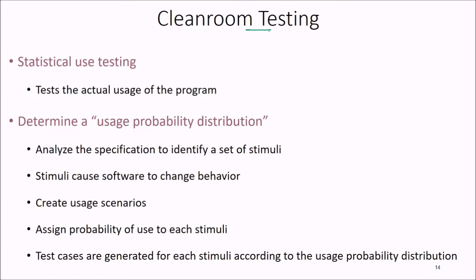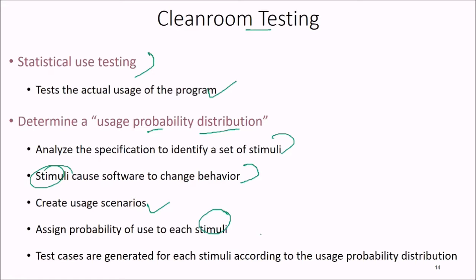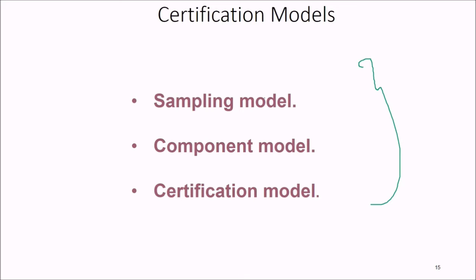In clean room testing, we use statistical testing — testing the actual usage pattern of the program. We find the usage probability distribution, analyze the specification to identify a set of stimuli, create usage scenarios, and assign probability to each stimulus. Test cases are generated for each stimulus according to the usage probability distribution. Certification models include the sampling model, component model, and certification model.